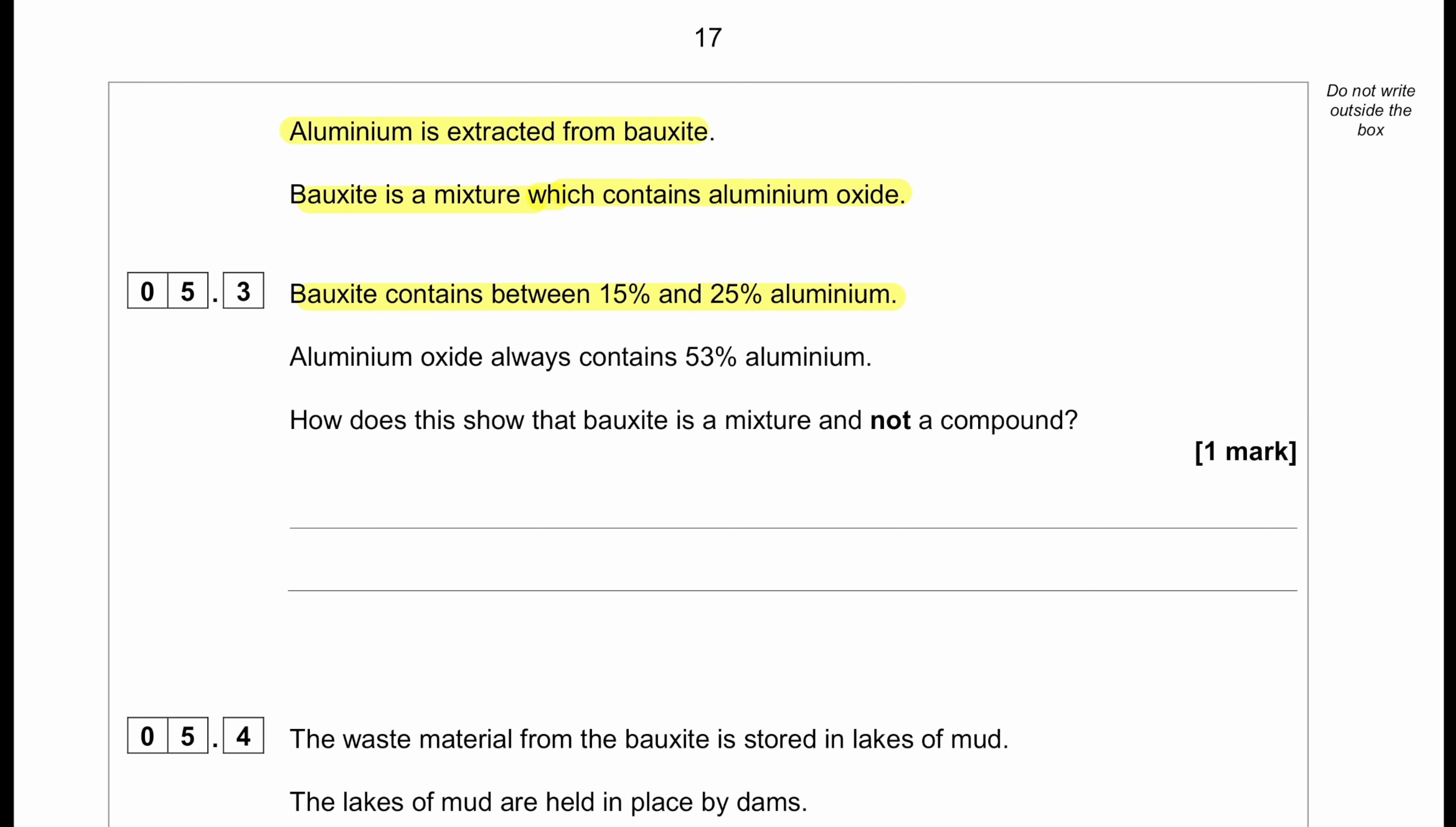Aluminium is extracted from bauxite. Bauxite is a mixture which contains aluminium oxide. Bauxite contains between 15% and 25% aluminium. Aluminium oxide always contains 53% aluminium. How does this show that bauxite is a mixture and not a compound? Because bauxite contains a variable percentage of aluminium.